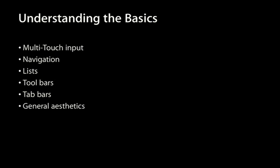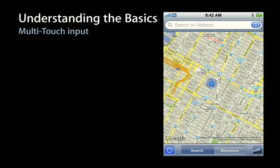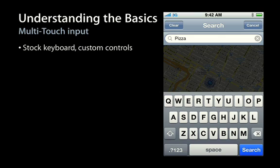The basics loosely consist of multi-touch input, navigation, lists, toolbars, tab bars, and general aesthetics. We've worked really hard to make the standard keyboard that comes with the iPhone as polished and intuitive as it can be for a multi-touch keyboard. But one of the best things about a multi-touch keyboard is that you can draw any custom controls you need for your application on the screen at any time. So finally, we're away from the age of WASD meaning up, down, left, right, and hitting the five key on a numpad equaling select. Now, if you need a control that is tools, you draw a tools control.